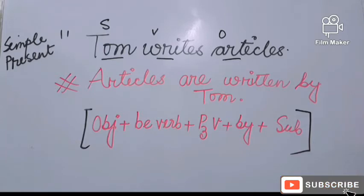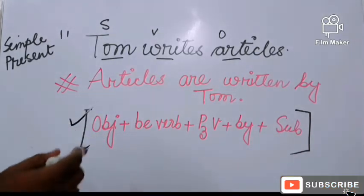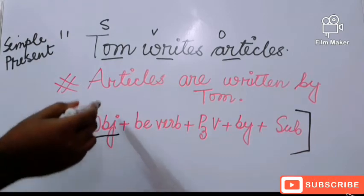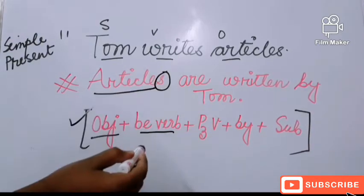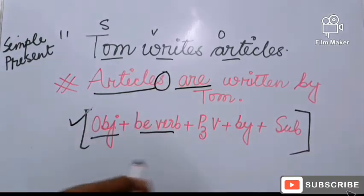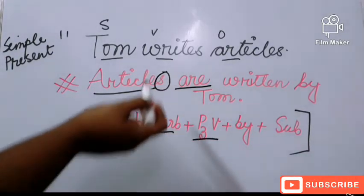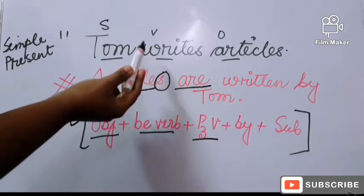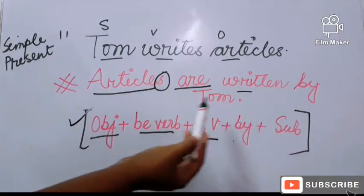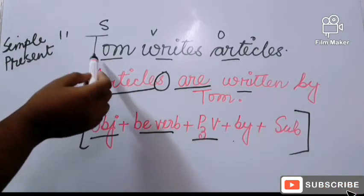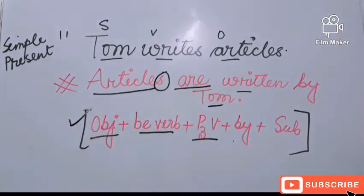Now let's change from active to passive voice, for which we will follow a formula. According to the formula, first comes the object — so 'articles' is the object. Then comes the be-verb; as 'articles' is a plural form, the be-verb will be 'are.' Then comes the P3 form of the verb — the verb is 'writes' so its past participle is 'written.' Then comes 'by,' and then the subject — Tom. So the passive voice will be: 'Articles are written by Tom.'